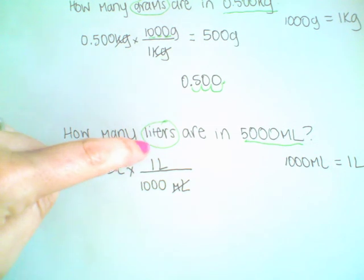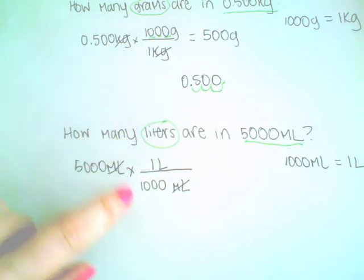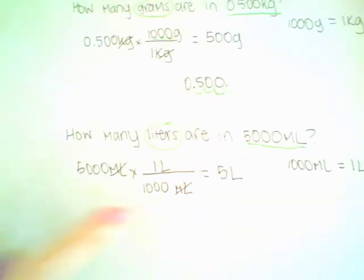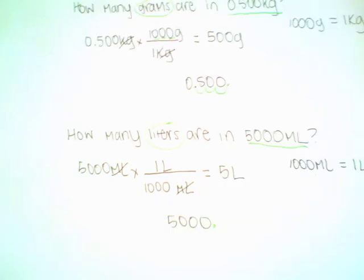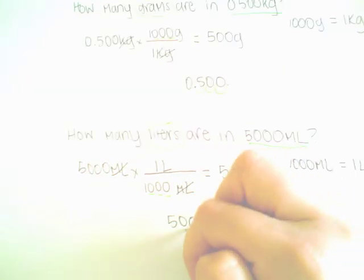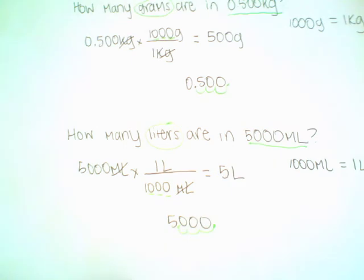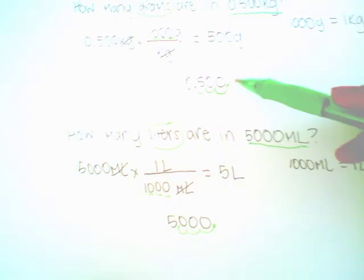Five thousand times one is five thousand, divided by one thousand gives you five liters. Referring back to the trick from the first problem: with five thousand, the decimal place is at the end. We are dividing by a thousand, which has three zeros, so we move the decimal back three places. Division means the number is going to get smaller, while in multiplication the number gets larger.